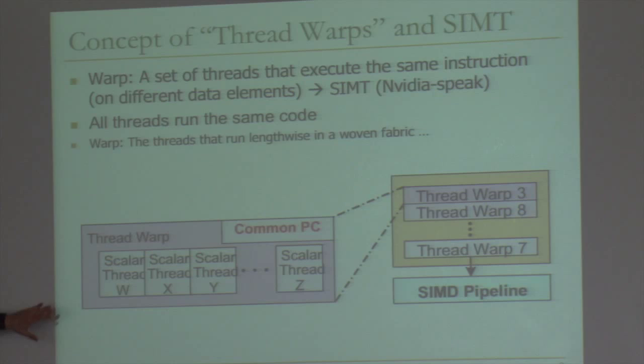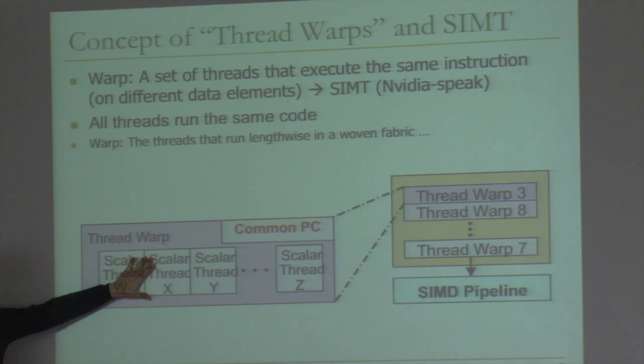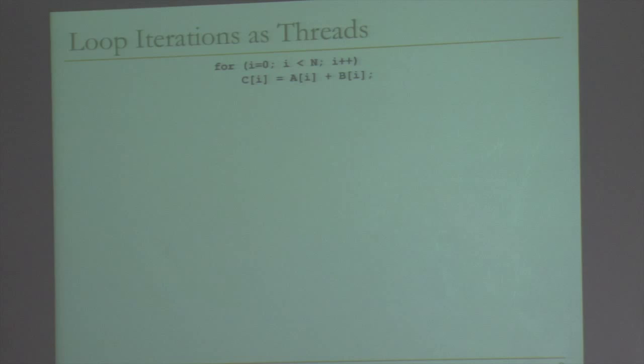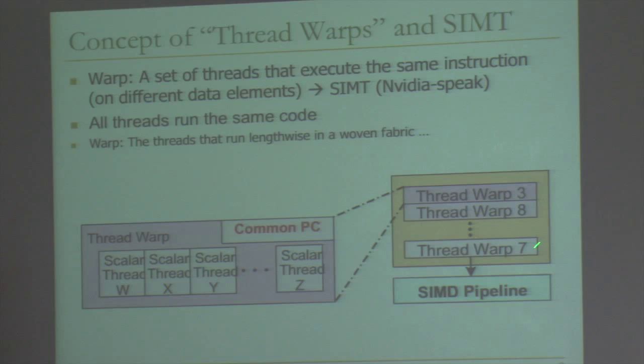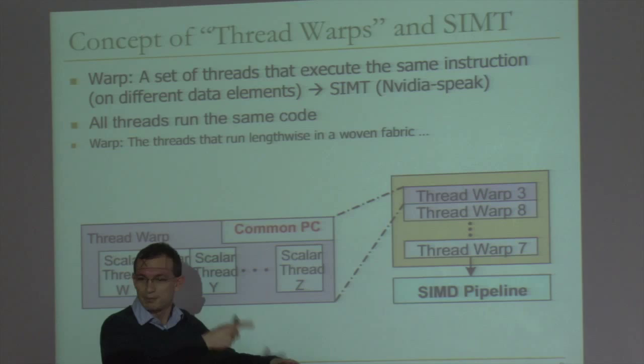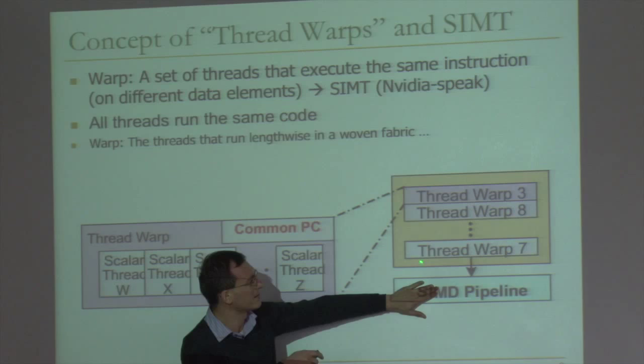It's not SIMD for the programmer — the programmer doesn't need to specify the vector length. In traditional SIMD, there's a single thread and no notion of scalar threads; you write a vector instruction. In warp-based SIMD, you have different threads that are grouped together. You can have many, many warps — a warp executing at the same time with the same PC, another warp with a different PC — and these thread warps are multiplexed on the same SIMD pipeline via fine-grained multi-threading.